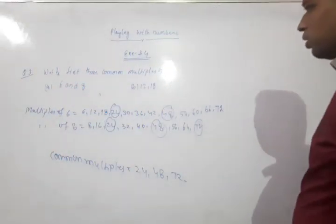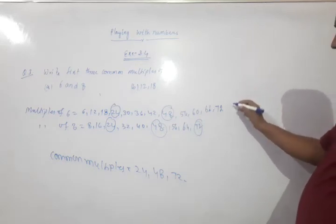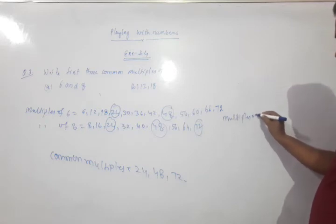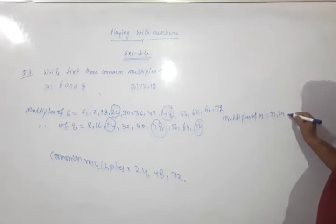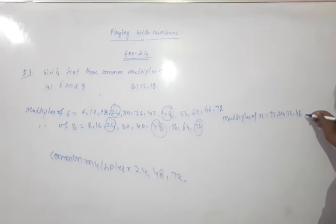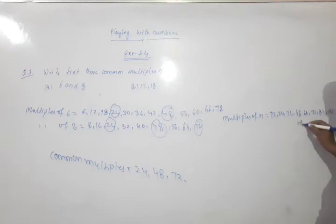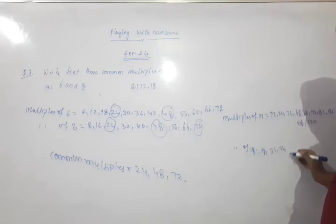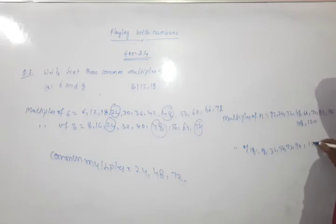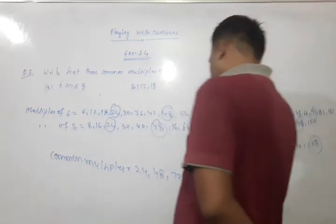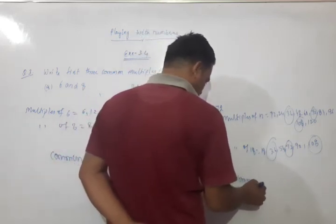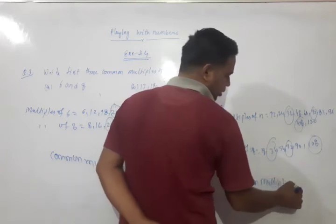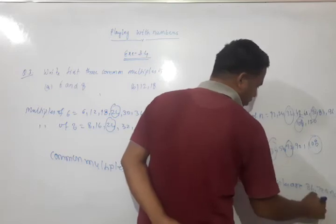Similarly for 12 and 18: multiples of 12 are 12, 24, 36, 48, 60, 72, 84, 96, 108, 120. Multiples of 18 are 18, 36, 54, 72, 90, 108. So common multiples are 36, 72, and 108. The first 3 common multiples of 12 and 18 are 36, 72, and 108.